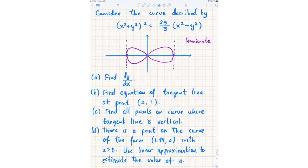So, we have this curve, and I've purposely given you a graph of it because it will be important later in the problem to also analyze the graph. Consider the curve described by this equation: (x²+y²)² = 25/3(x²-y²).